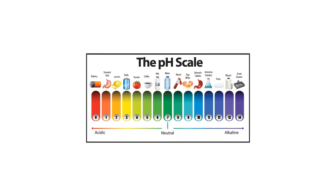Understanding pH. From a chemistry point of view, pH is a measure of the hydrogen ion concentration in a water or aqueous solution. From a practical point of view, pH is an indication of how acidic or how alkaline a solution is. The value of pH is measured on a scale between 0 and 14.